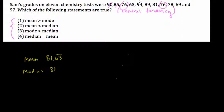63 does not appear again, so that's out. Now, there's 94, 89, or 81, or 78, or 69, or 97. The only number repeated here is 76. So, that means our mode is 76.